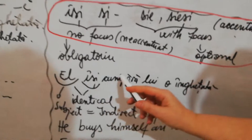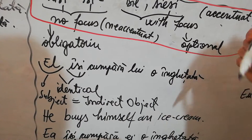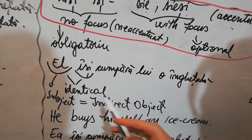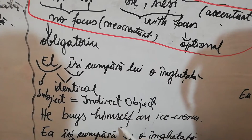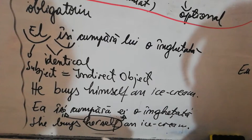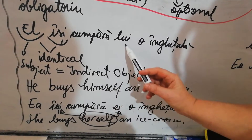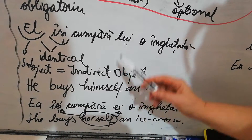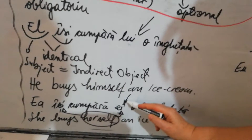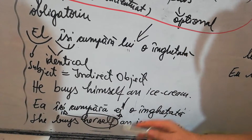'El își cumpără lui o înghețată' - he buys an ice cream to himself. 'El' and 'își' are identical; subject and indirect object are the same. He buys himself an ice cream. 'Ea își cumpără ei o înghețată' - she buys herself an ice cream. 'Ei' and 'lui' are not mandatory; they are used only when you need focus. You can simply say 'el își cumpără o înghețată' or 'ea își cumpără o înghețată'.